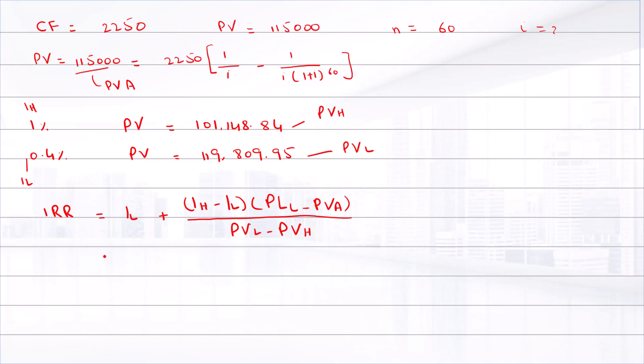So by putting values in the equation: 0.004 plus (0.01 minus 0.004) times (119,809.95 minus 115,000)